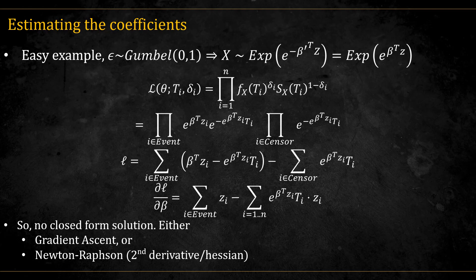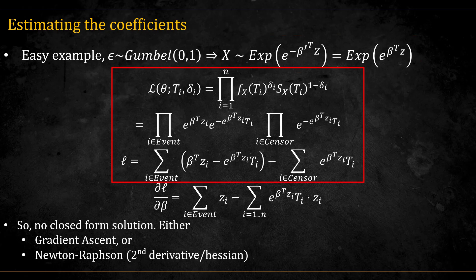Here is a very simple derivation for the Gumbel 0,1. This results in the time to event distributing exponential. In order to avoid dealing with the minus sign, I'm simply going to swallow it in the betas. Deriving the likelihood for the data, we get this, and taking the derivative, we get this. We cannot simply equate this to zero and get a solution, so we need to either do gradient ascent, or use the Newton-Raphson method, which requires the second derivative, or the Hessian. This is what the survival package in R uses.